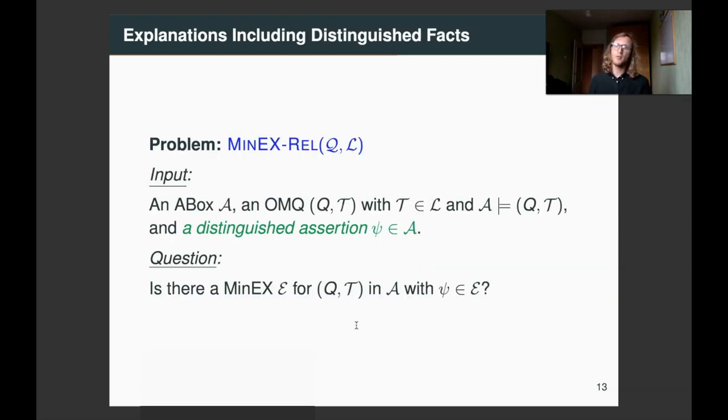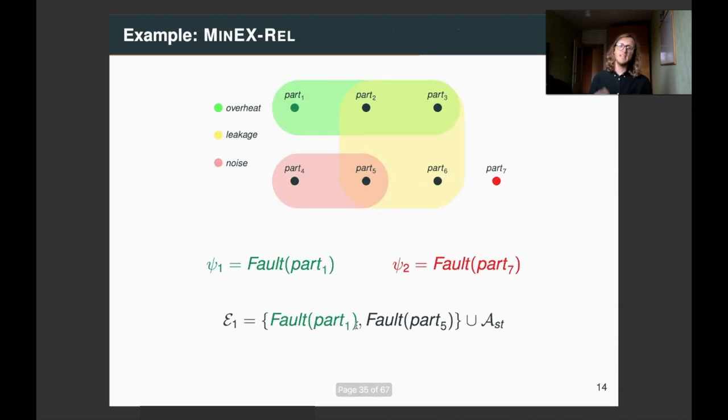And another problem is minex-rel. This problem asks whether given a particular assertion in the A-box, is that assertion in some minimal explanation? That is, is this assertion relevant for explaining the entailment of the query? So, in this case, for example, fault part one is relevant, because there is an explanation, a minimal explanation that contains it, while fault part seven is not relevant, because there is no explanation that contains it.